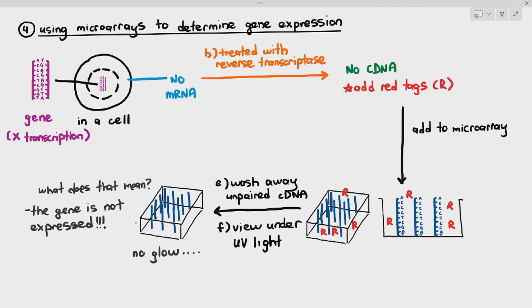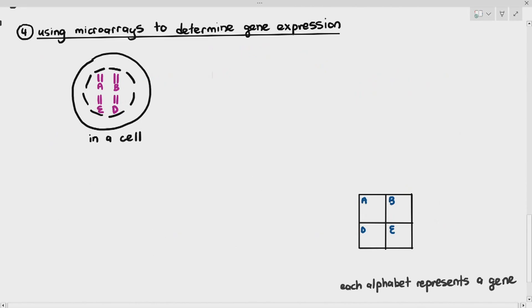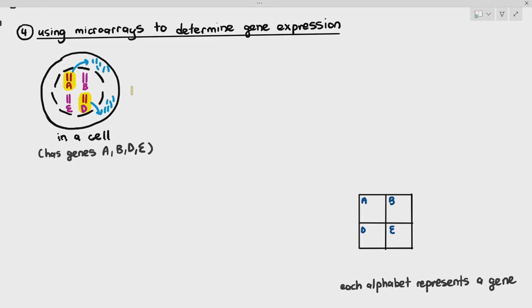Let's put this into action. Instead of nine positions like earlier examples, we'll use just four positions: A, B, E, and D. These four positions each represent a gene probe for a single gene. The cell also has four genes: gene A, gene B, gene E, and gene D.